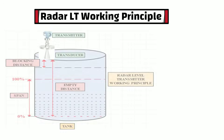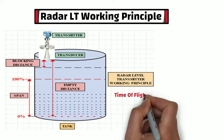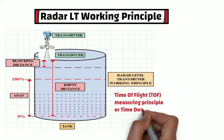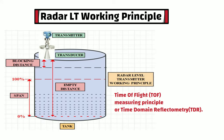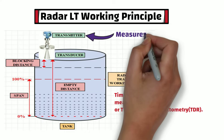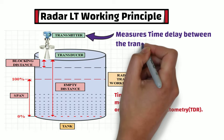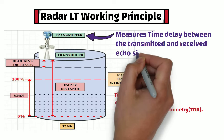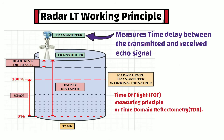Radar level transmitter works on the time of flight measuring principle, or time domain reflectometry principle. In radar level measurement, the transmitter sends high frequency radar pulses traveling at the speed of light towards the bottom of the tank. These pulses bounce off the product surface and return to the sensor. The transmitter's microprocessor then measures the time delay between the transmitted and received echo signal, and calculates the distance to the liquid surface.